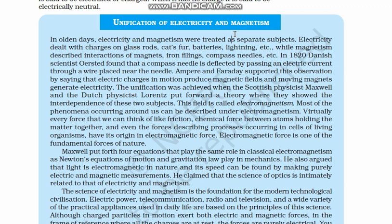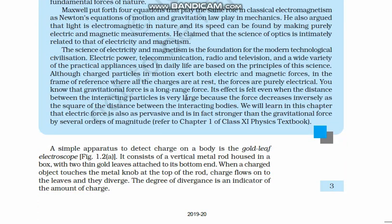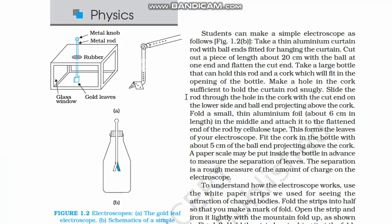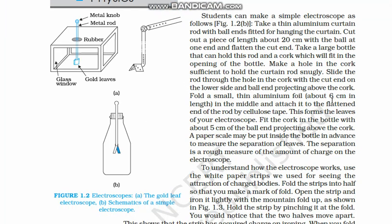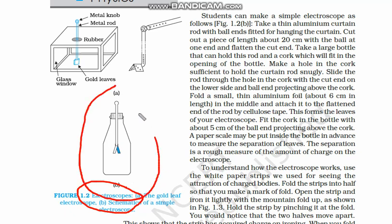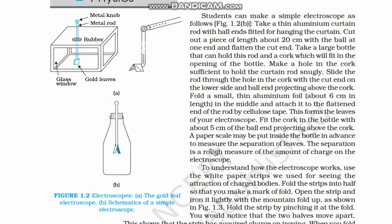Now let us discuss charging by conduction. For charging by conduction, there is a very simple instrument called an electroscope. The construction of an electroscope is simple: you take a container and put a wire or any conducting material — either a paper clip or a conducting piece of metal — and then you take an aluminium foil.